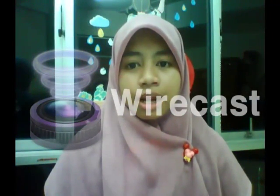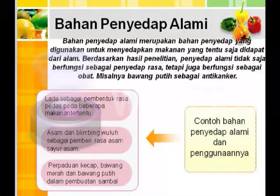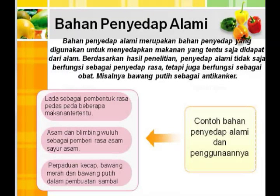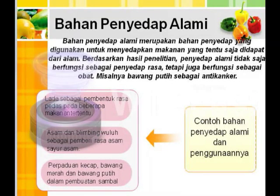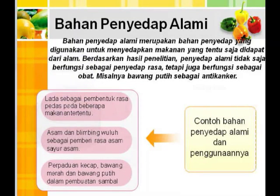Bahan penyedap alami yaitu bahan penyedap yang digunakan untuk menyedapkan makanan yang didapat dari alam. Berdasarkan hasil penelitian, penyedap alami tidak saja berfungsi sebagai penyedap rasa, tetapi juga berfungsi sebagai obat, misalnya bawang putih sebagai antikanker. Contoh bahan penyedap alami yaitu lada sebagai pemberi rasa pedas, asam dan belimbing wuluh sebagai pemberi rasa asam pada sayur asam, dan perpaduan antara kecap, bawang merah, bawang putih dalam pembuatan sambal.